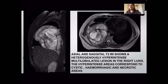An MRI was performed. On the sagittal and axial T2-weighted images, it shows a heterogeneously hyperintense multi-lobulated lesion in the right lung. The hyperintense areas on T2 correspond to cystic hemorrhage or necrotic areas containing mixed solid material.